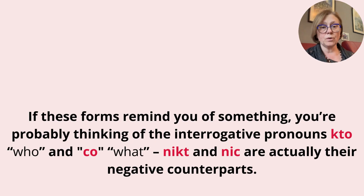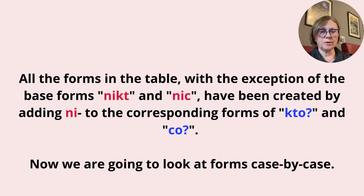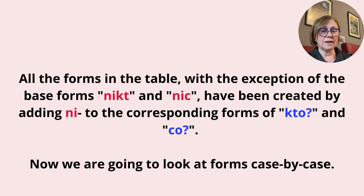If these forms remind you of something, you are probably thinking of the interrogative pronouns Kto (who) and Co (what). Nikt and Nic are actually their negative counterparts. All the forms in the table, with the exception of the base forms Nikt and Nic, have been created by adding Ni- to the corresponding forms of Kto and Co. So now we are going to look at the forms case by case.